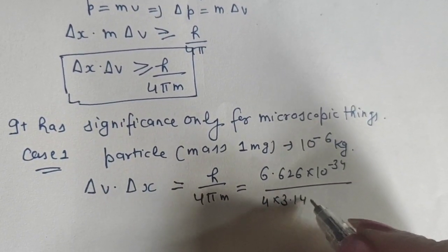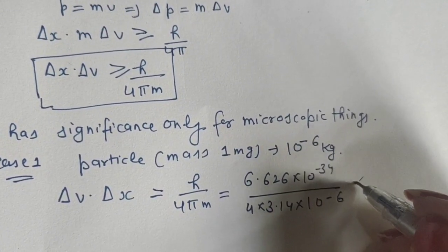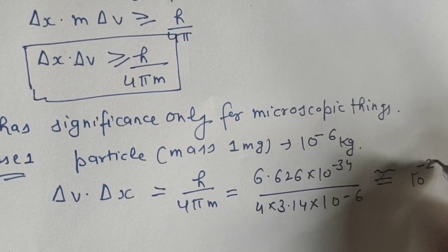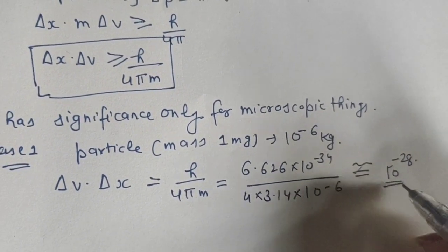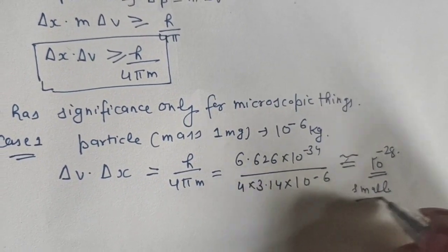π = 3.14, mass = 10^-6 kg. When we calculate, the value is approximately 10^-28, which is a very small value that cannot be measured.